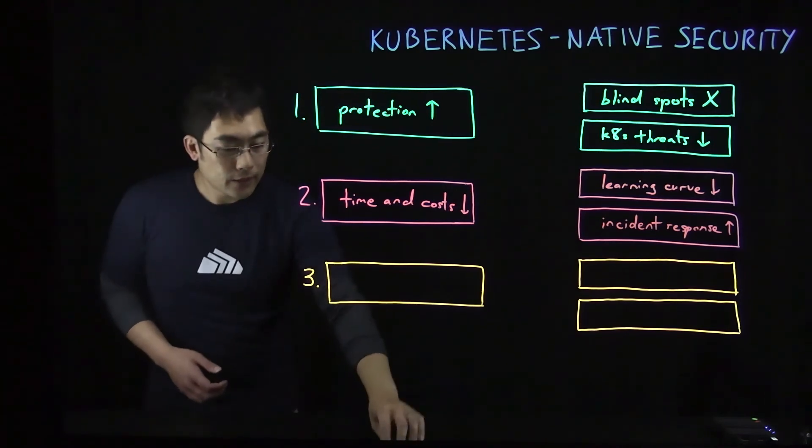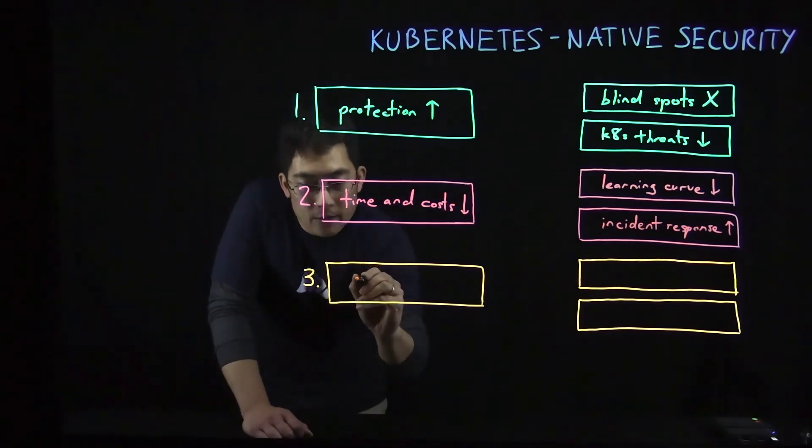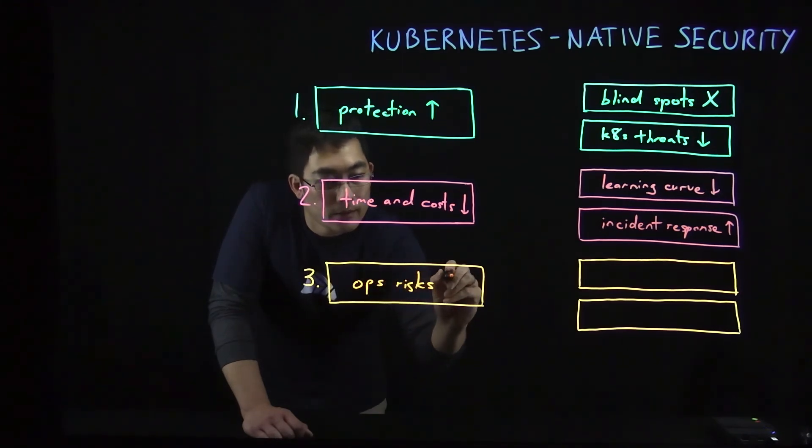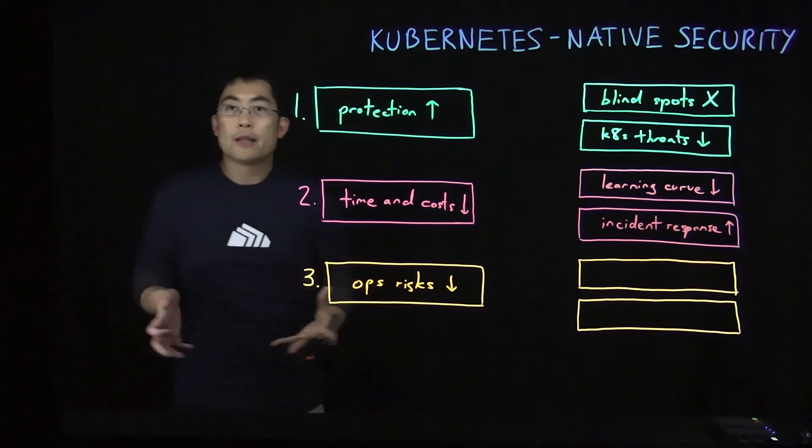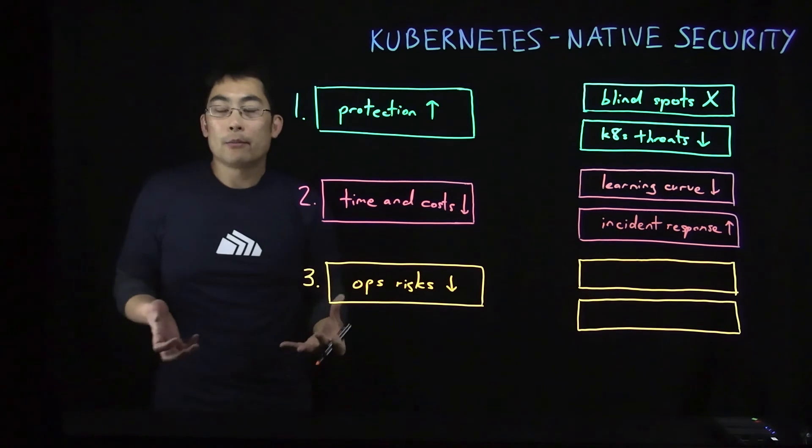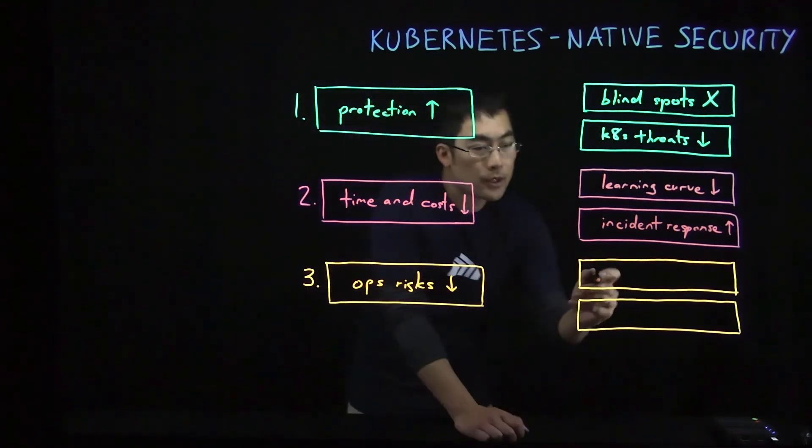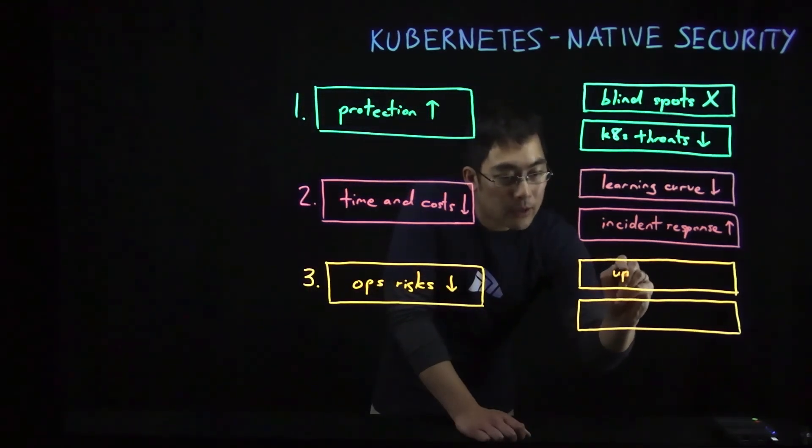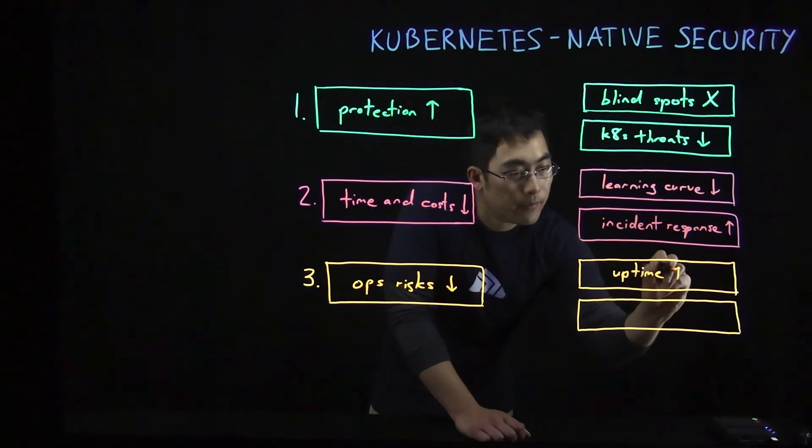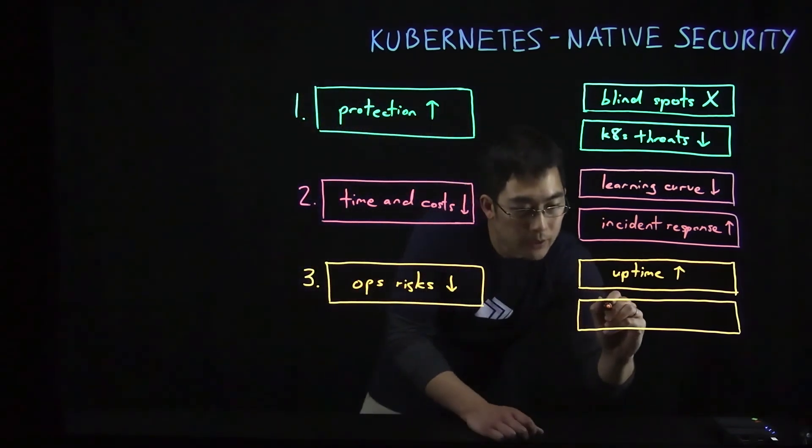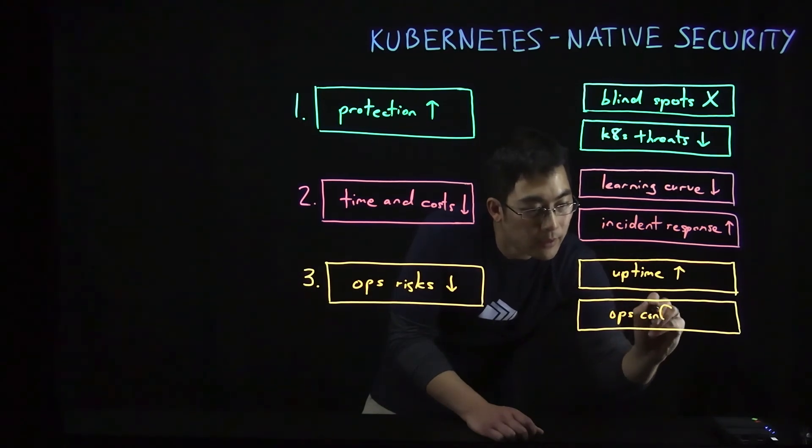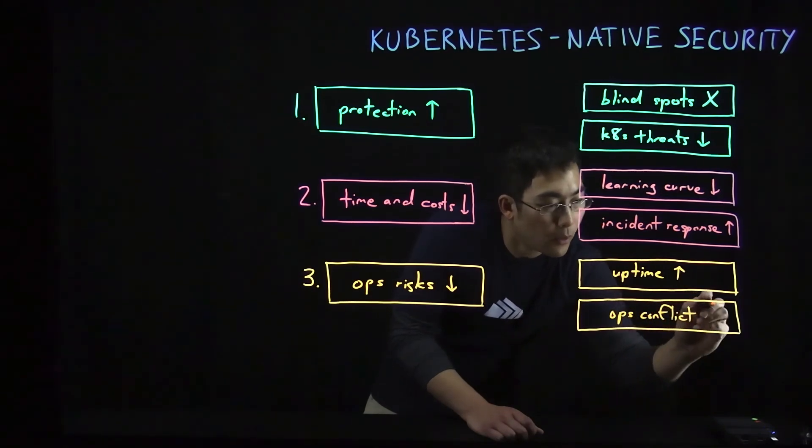The third key benefit to Kubernetes native security is that it minimizes your operational risks to the infrastructure and applications that make up your Kubernetes environment. It does this by utilizing Kubernetes itself to achieve highly scalable security enforcement that reduces disruption to your applications, resulting in greater uptime overall. It also helps eliminate operational conflict within the environment that stems from things such as inconsistent configurations or user errors.